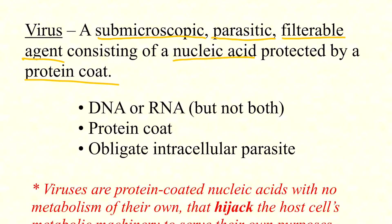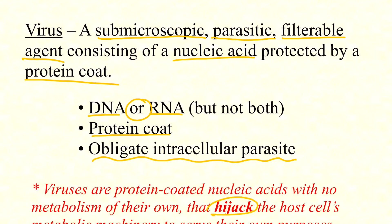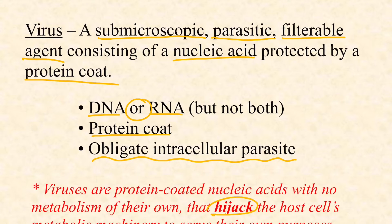Viruses have very simple information — very few genes, somewhere around five to fifteen genes is pretty typical — protected by a protein coat so it can get from one host cell to another. Their genome includes DNA or RNA, but not both. In red at the bottom I've got a less textbook but perhaps more helpful definition: viruses are protein-coated nucleic acids with no metabolism of their own that hijack the host cell's metabolic machinery. They get inside a host cell, take over, shut down most of its normal functions, and turn it into a factory to make more virus.